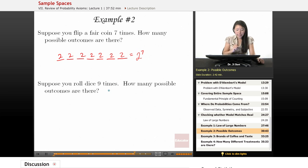Suppose you roll dice nine times. How many possible outcomes are there? Well, think of each roll of the die as a potential event that could have six different possibilities, right? And so each has six. And so this would be six to the ninth power, right?